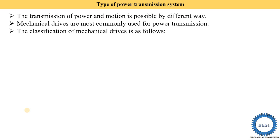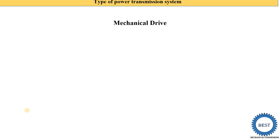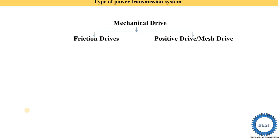The classification of mechanical drive is as follows. Mechanical drive is basically classified into two categories: the first one is called friction drive and the second one is called positive drive or mass drive. Power or motion is transmitted due to friction in a friction drive, that's why they are called friction drives.